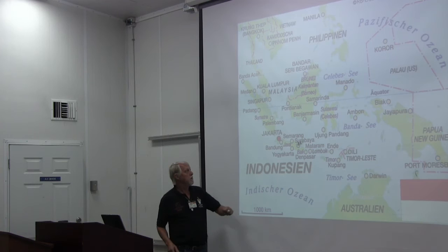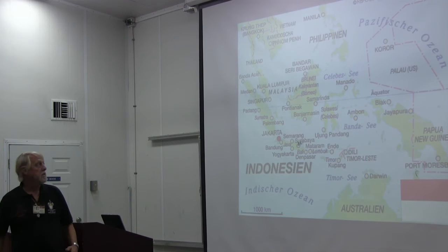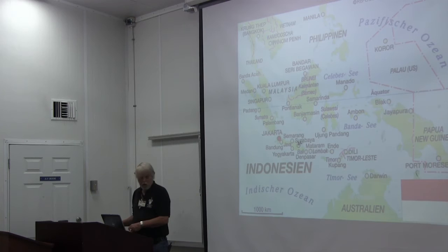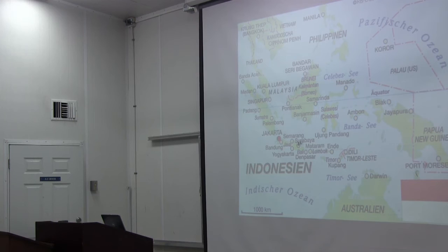Borneo is a very exceptional island — I think the third largest island in the world — with all kinds of interesting stuff on it. Let me draw your attention to these islands in here — these are the Moluccas, M-O-L-U-C-C-A-S, also known as the Spice Islands.